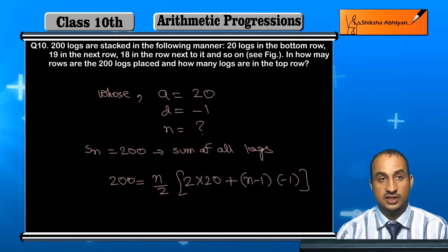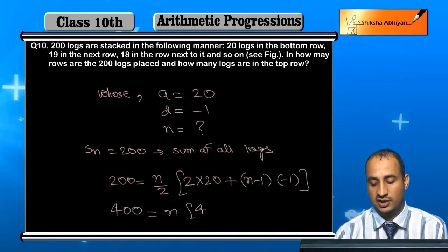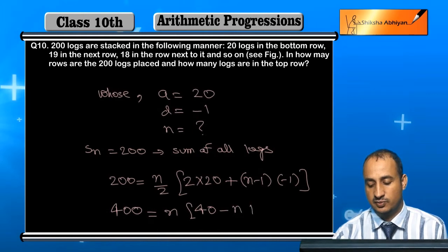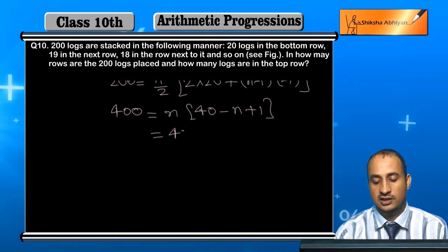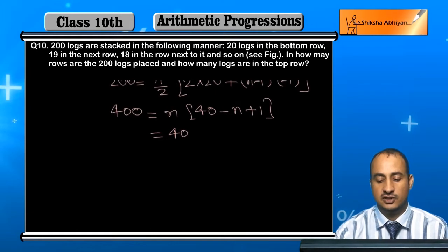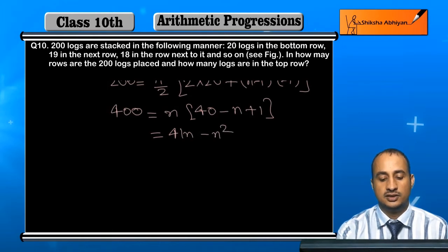So we get 400 equals n times 40 plus n times (n minus 1) times minus 1. This gives us 400 equals n times 40 minus n squared plus n, which simplifies to n squared minus 41n plus 400 equals 0.